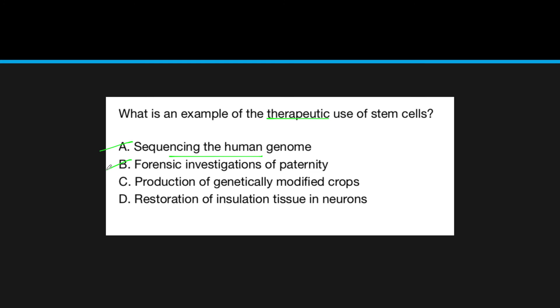This is an example question: What is an example of a therapeutic use of stem cells? Sequencing of the human genome? Any DNA can be used for this, any cell, so stem cells are not necessary. Forensic investigations of paternity? Same thing—you just need any cell and any DNA.